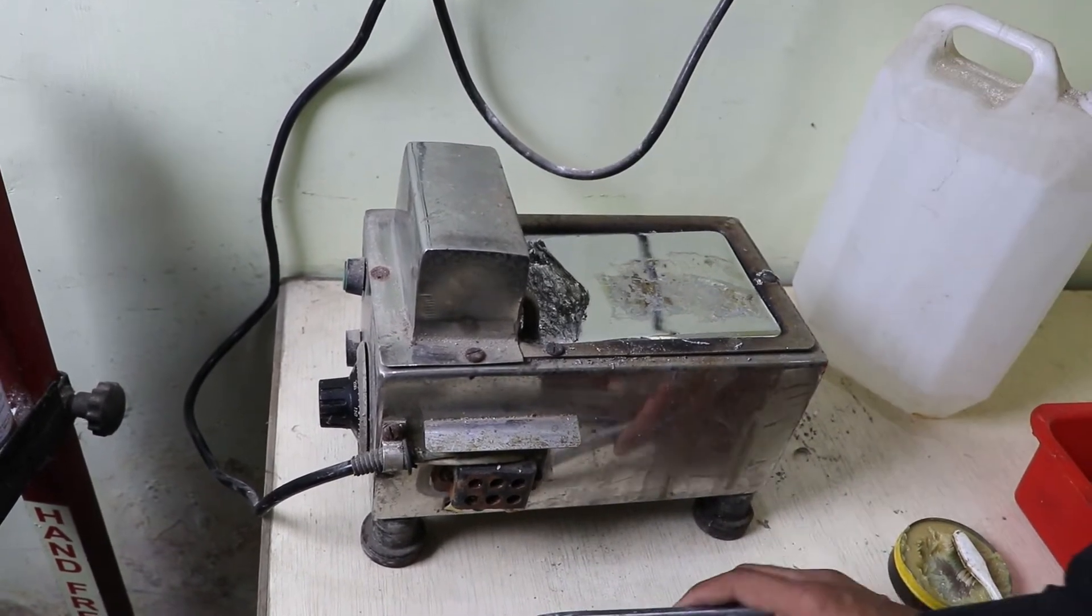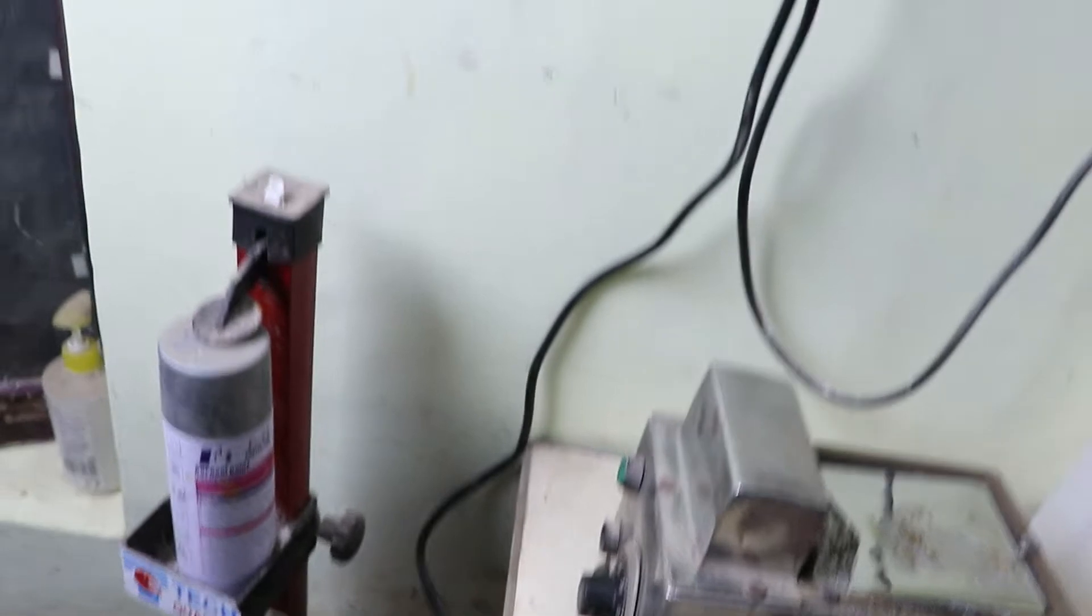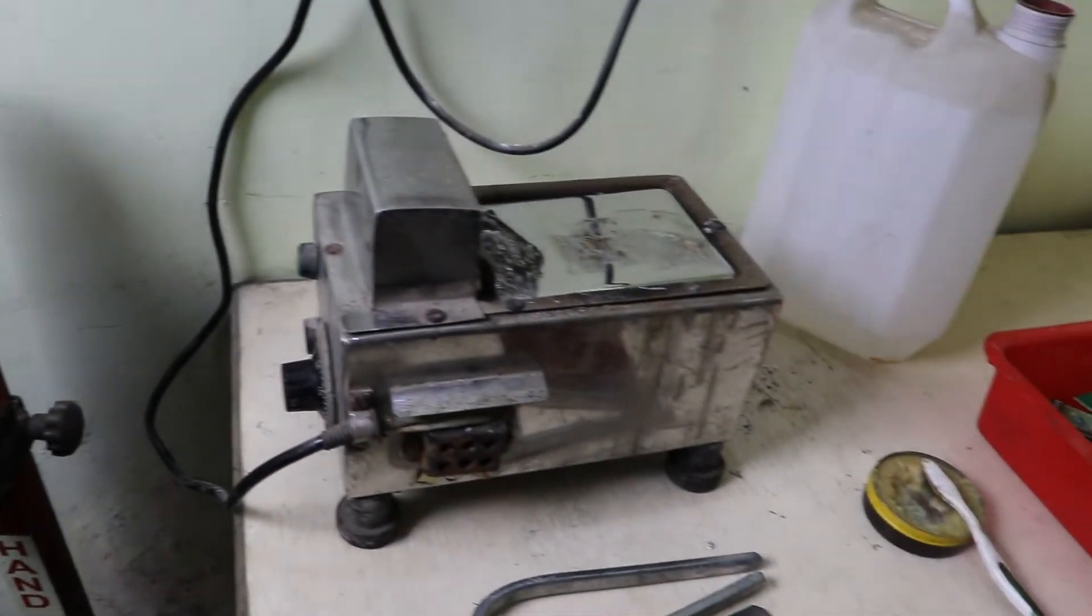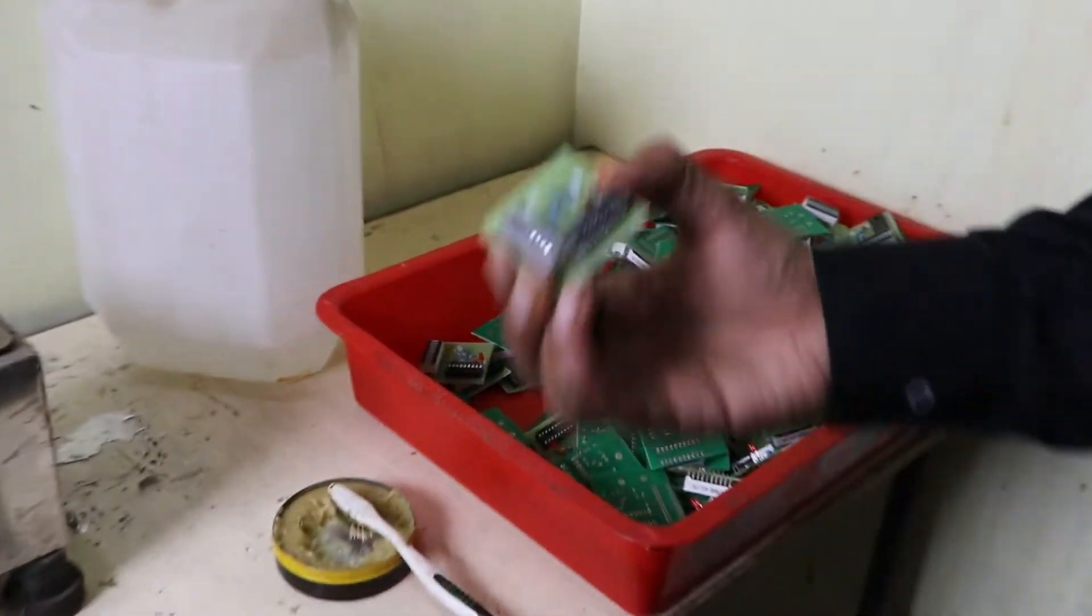You just need to put this solder rod in the molten solder. This machine requires 230 volts. These are some PCBs.